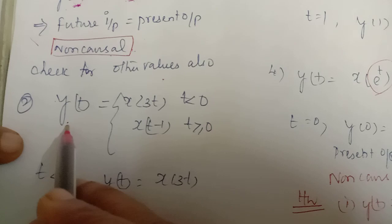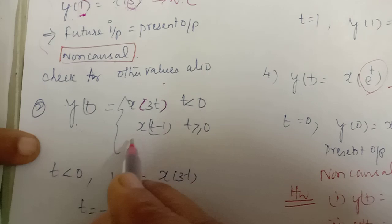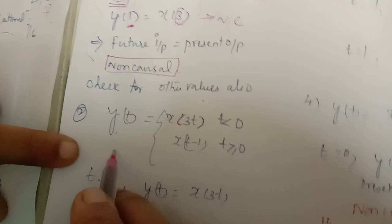We will go to the second problem: checking causal and non-causal systems. The given system is y(t) = x(3t) for t < 0, and y(t) = x(t - 1) for t ≥ 0. We need to check whether this system is causal or non-causal.